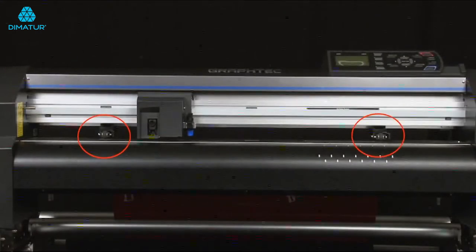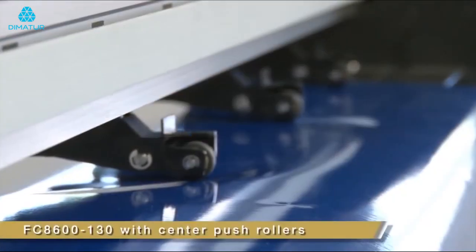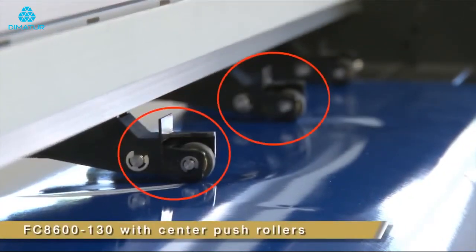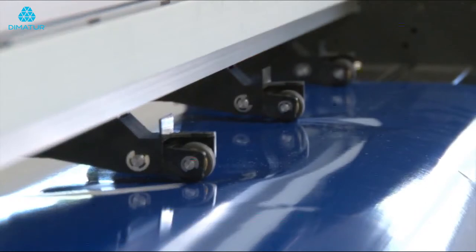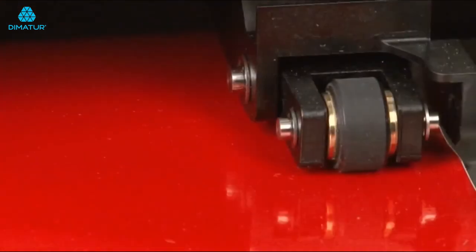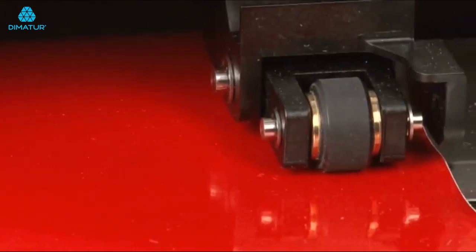On the top side of that area are the push rollers. On every cutter you'll have two outside push rollers, and except for the FC8660 and the FC8675, there will be one or more push rollers in the middle. The purpose of these rollers is to push down on the vinyl material to hold it in place while it is being cut.